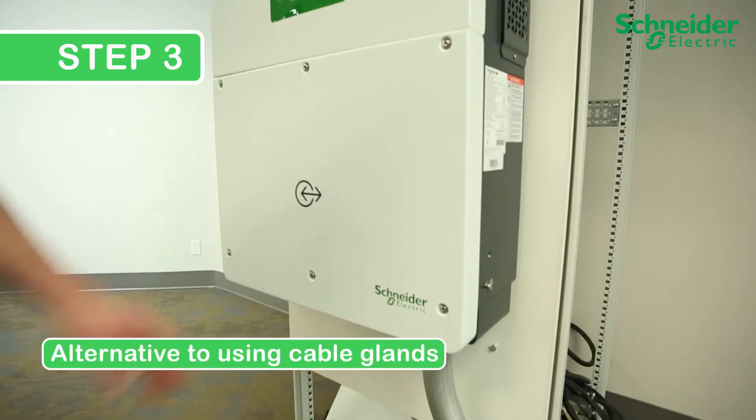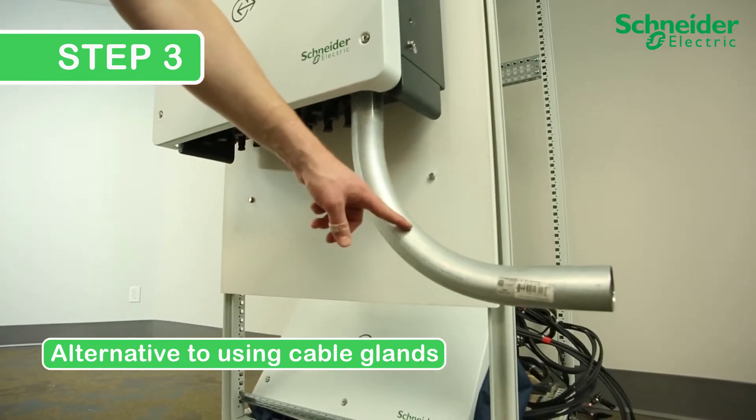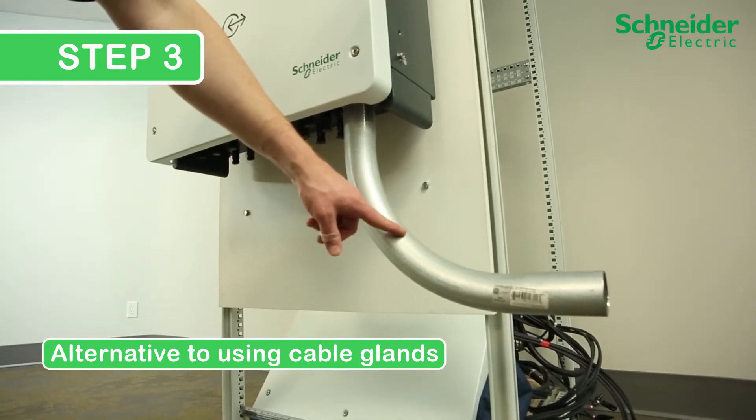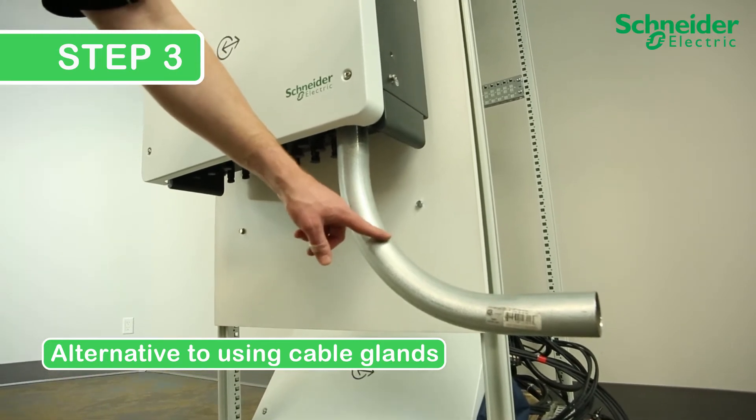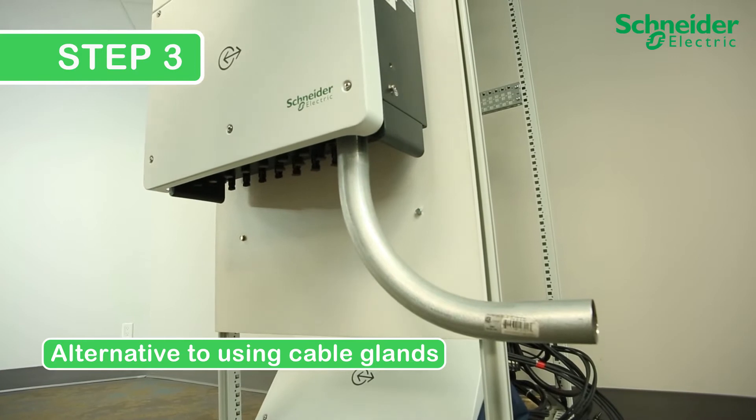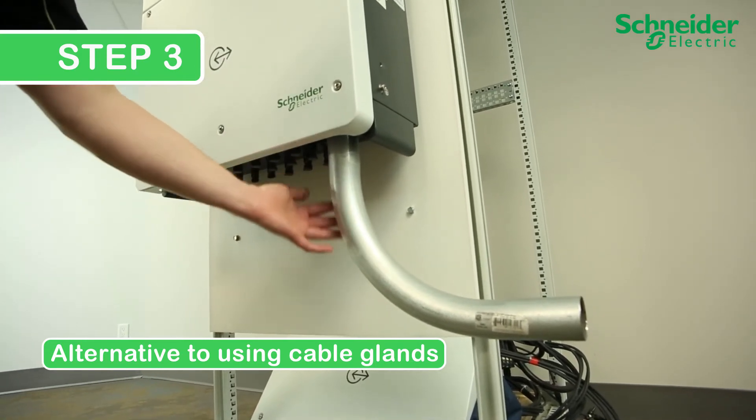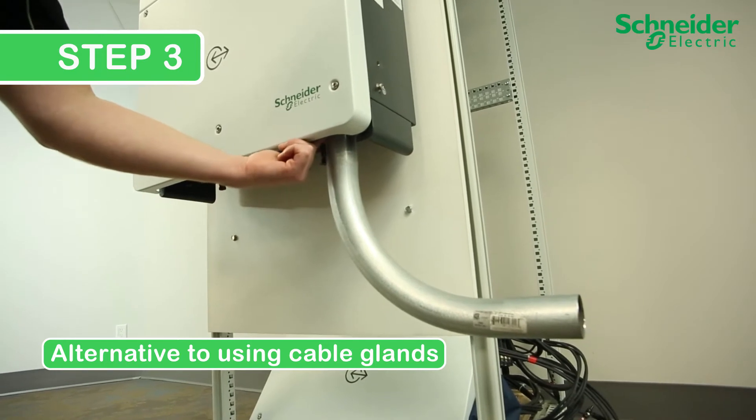As an alternative to using cable glands, conduit can be used with the CL60. There are different options in conduit types, and selection depends on your jurisdiction's regulations to meet proper installation requirements. Independent of conduit type, a weather-tight seal must be used with conduit to ensure that the IP rating of the unit is maintained.